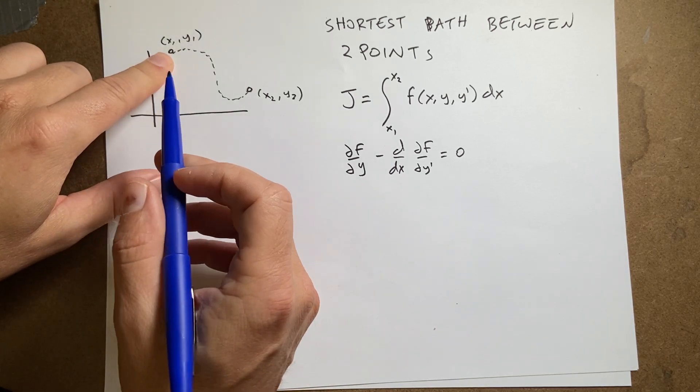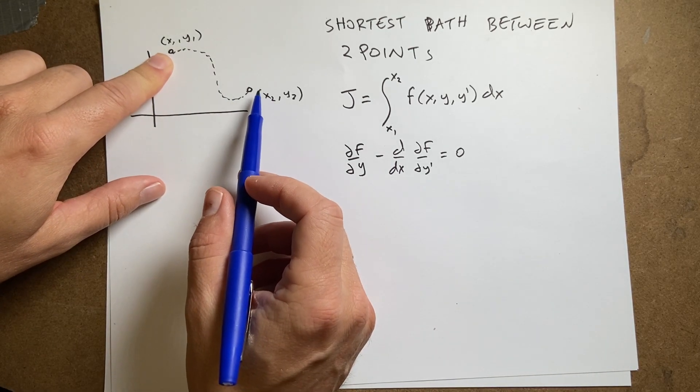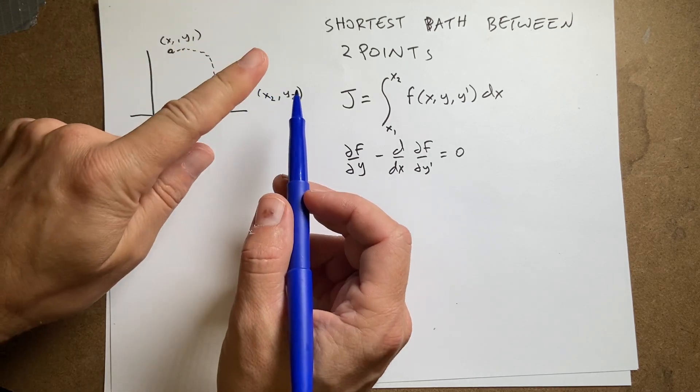So, here I have point x1, y1. I want to get to point x2, y2 in the shortest path. And this is the thing.